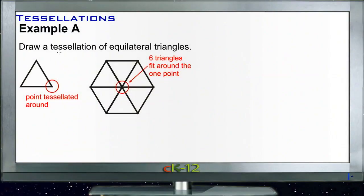Alright, so for Example A, we're supposed to draw a tessellation of equilateral triangles. An equilateral triangle is a triangle that's the same on all three sides, and we're going to tessellate around one of the corners.